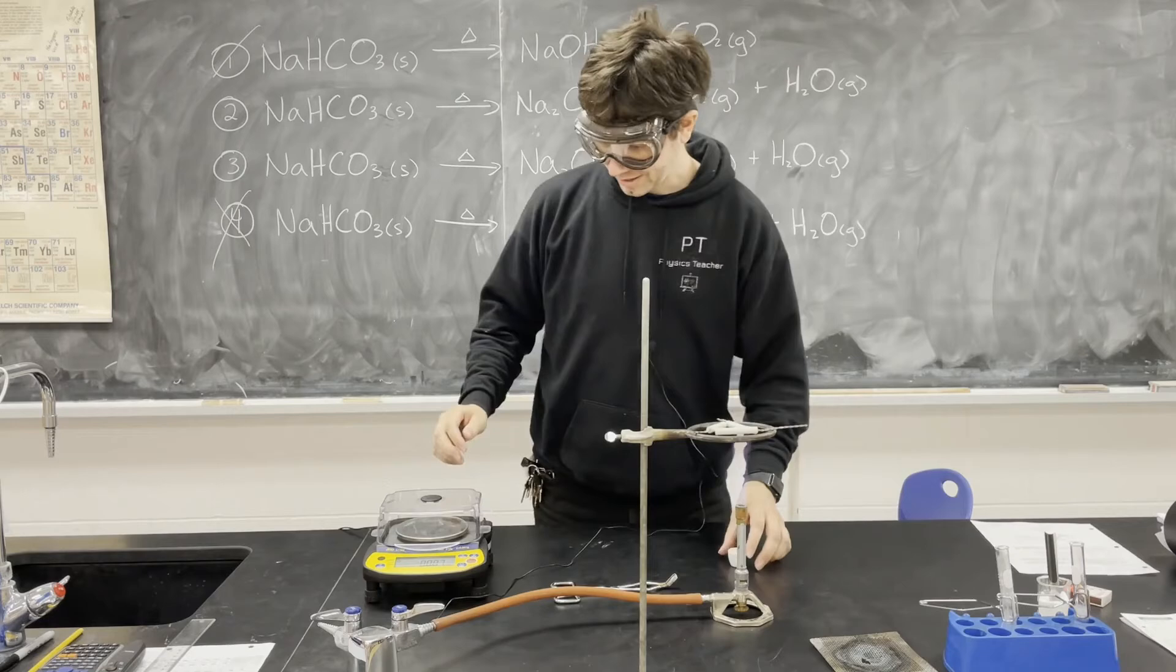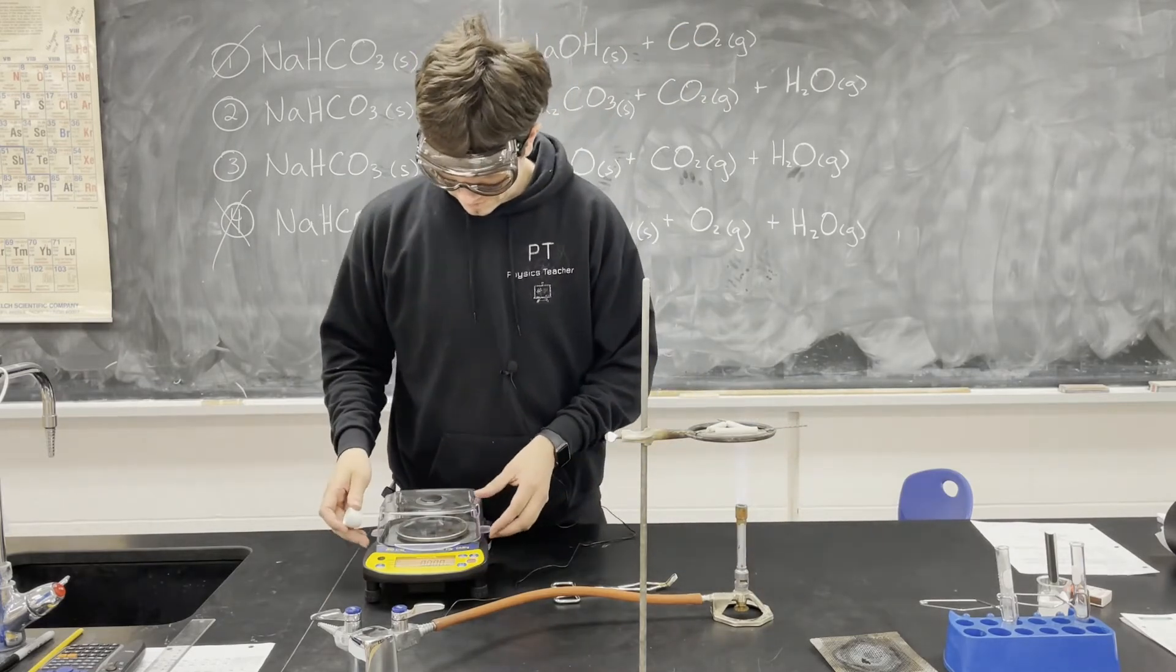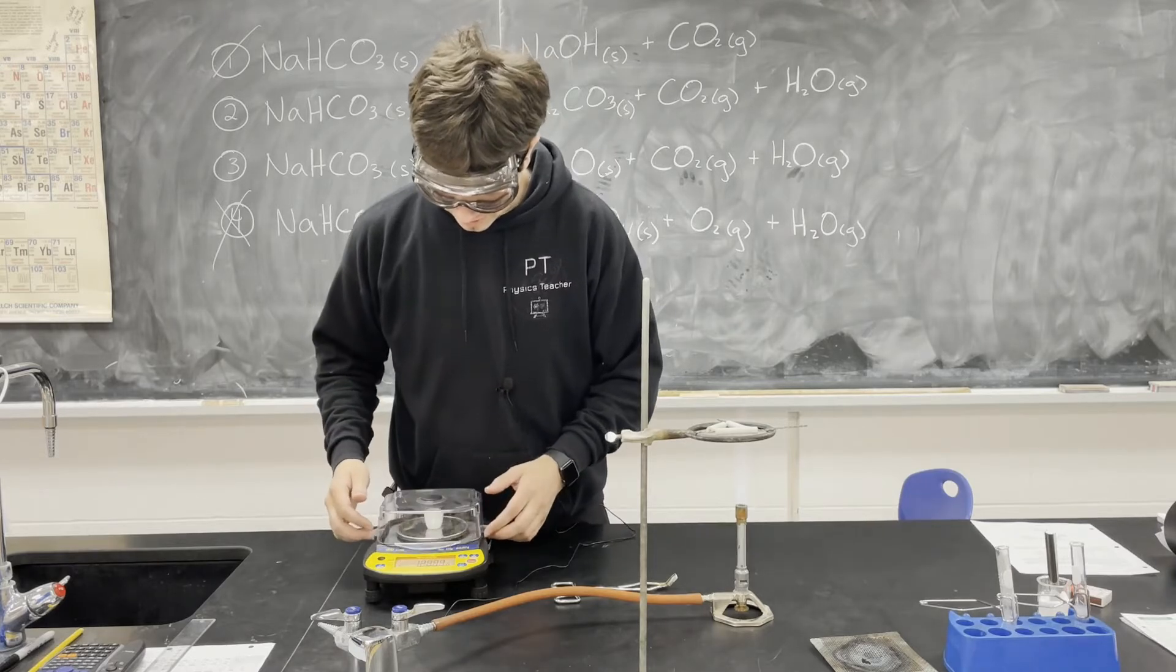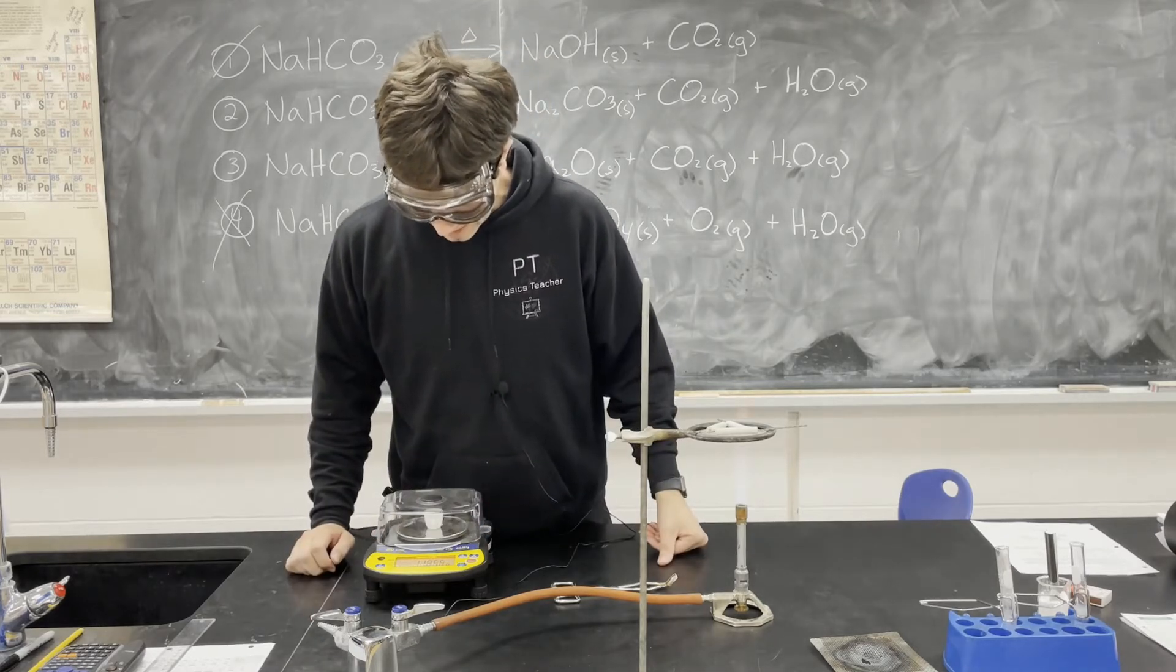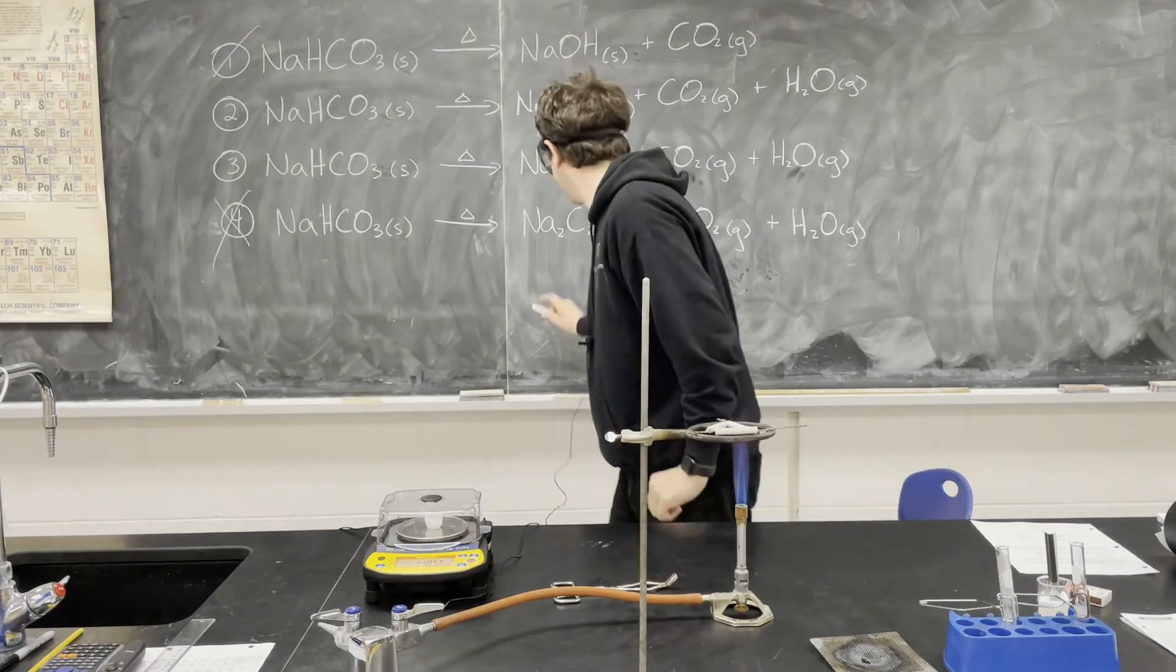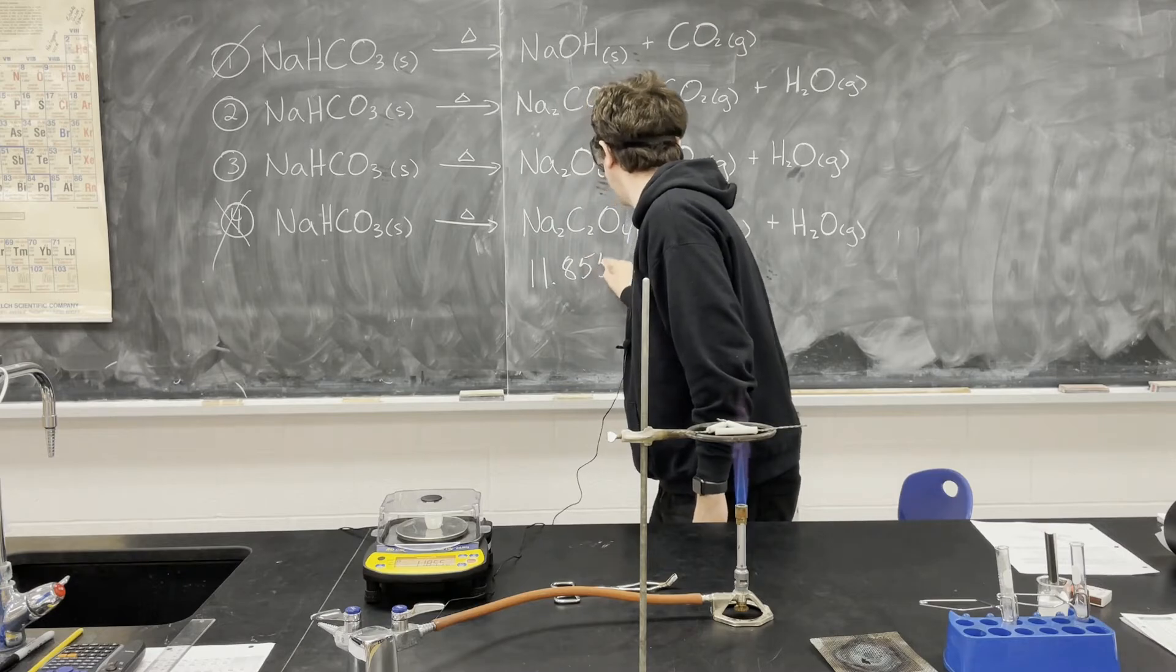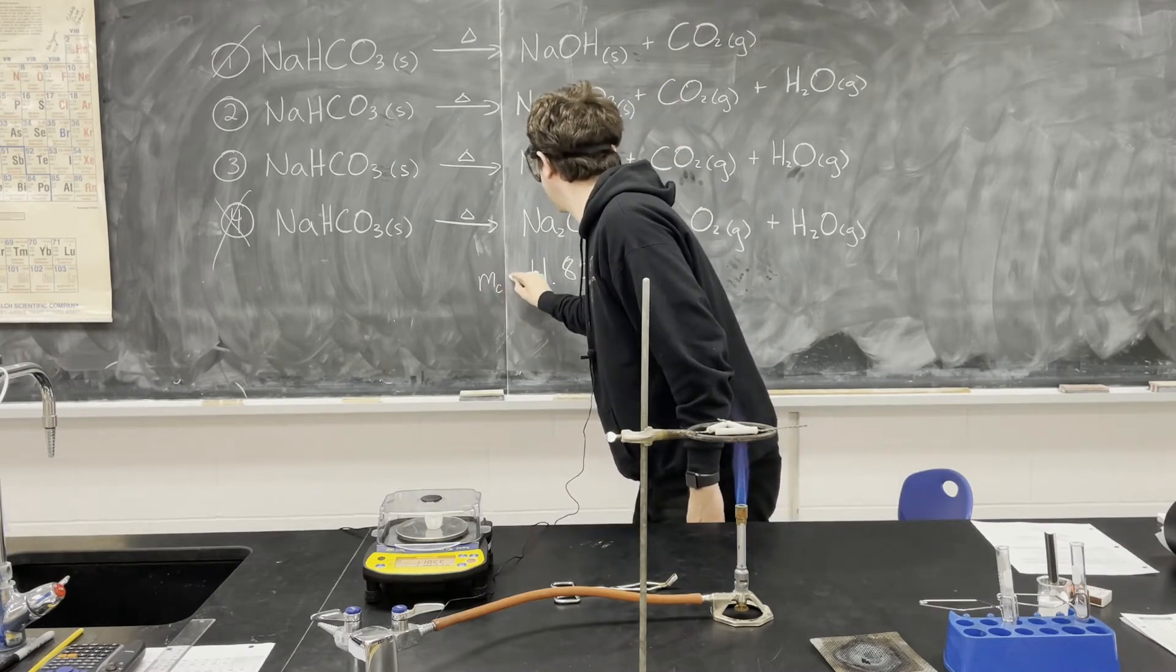So, let's start. We'll go zero. The mass of the crucible is 11.855 grams. So, mass of the crucible, 11.855 grams.